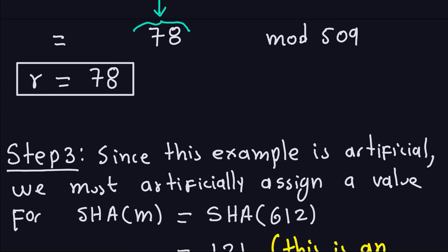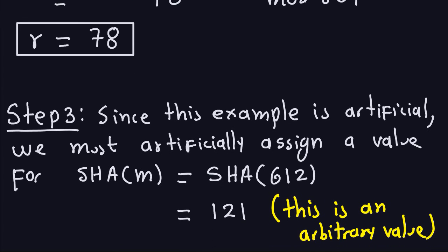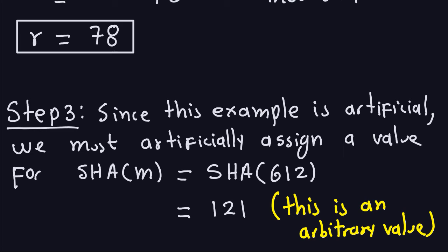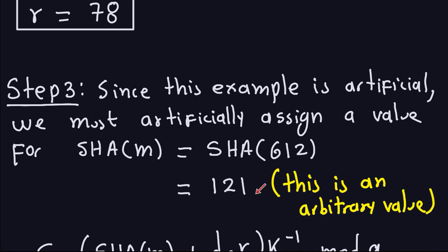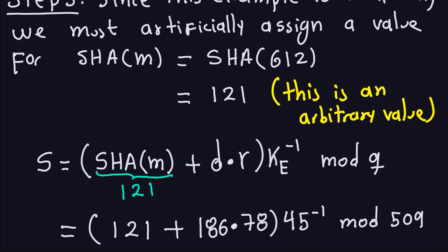Now step three. Since this is an artificial example with very small primes, we must artificially assign a value to the hash. The hash of message 612 — I'm going to pretend it gives 121. In reality, the hash algorithm produces a 160-bit result, so 121 is far too small — but for this artificial example, let's accept it.